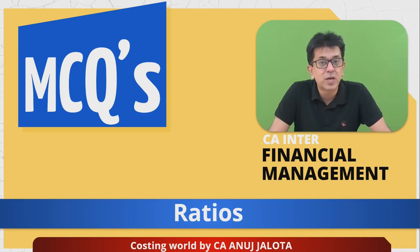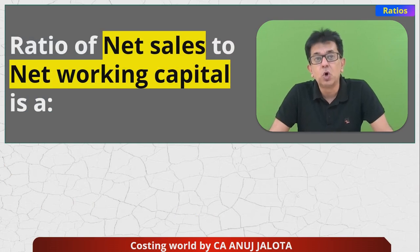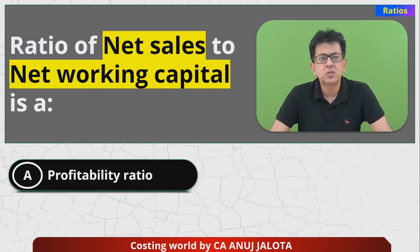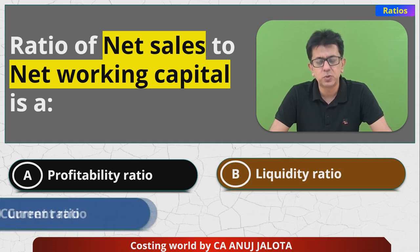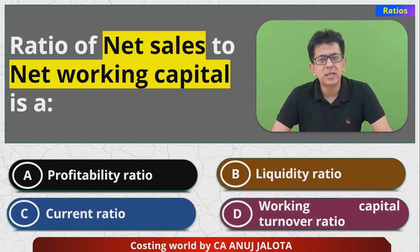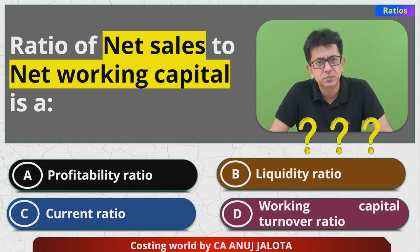Let's start. We are doing the chapter on ratios. MCQ number one: the ratio of net sales to net working capital is — option A: profitability ratio, B: liquidity ratio, C: current ratio, D: working capital turnover ratio. Think of the correct answer and put it in the comments below.